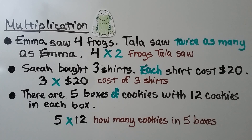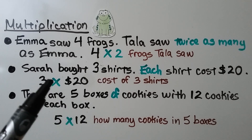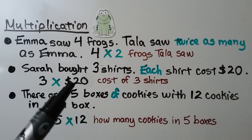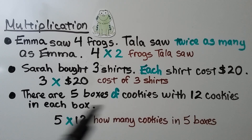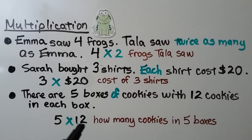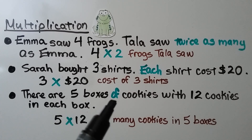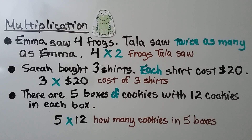Sarah bought 3 shirts, so we use multiplication: 3 times $20 for the cost of the 3 shirts. There are 5 boxes of cookies with 12 cookies in each box, so we have 5 times 12. Generally when you see the word 'of,' that signals multiplication. That's how many cookies are in 5 boxes.